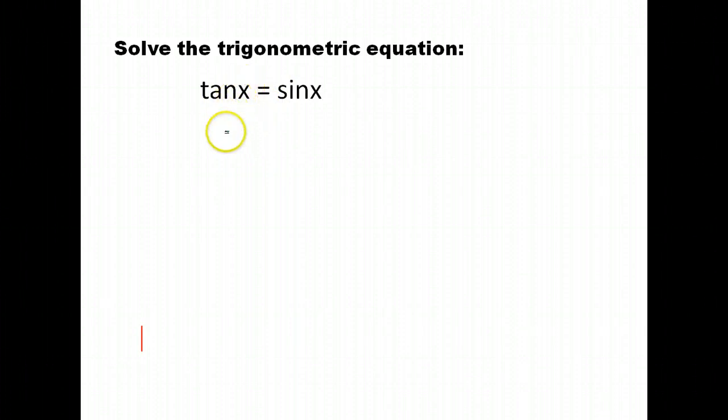So one thing I might try is, I know tangent is sine x divided by cosine x. That gives me a little closer, because at least they're all written in terms of sine and cosine. And then what I might try is maybe I'll multiply by cosine x so that I'm not dealing with a fraction. So now I have that sine x equals sine x cosine x. Well, I still have mixed things.